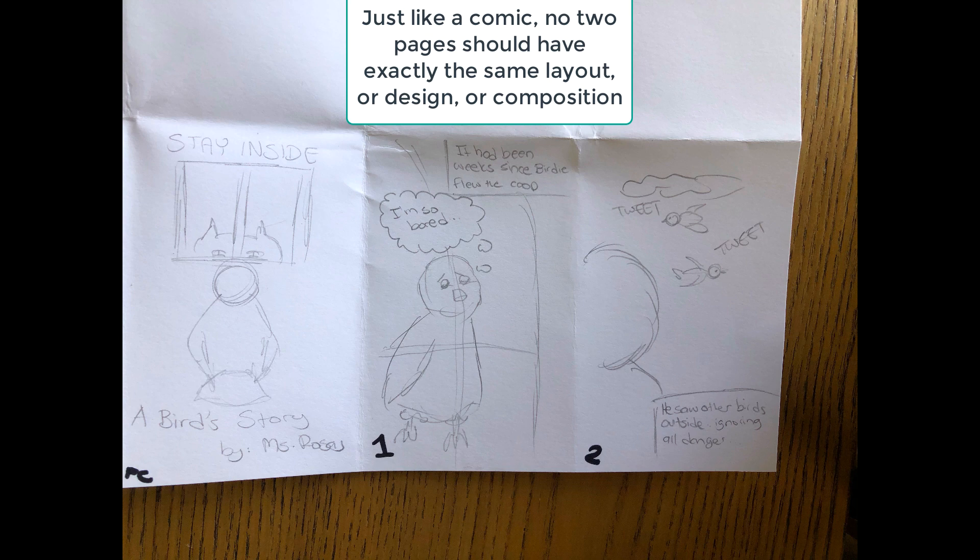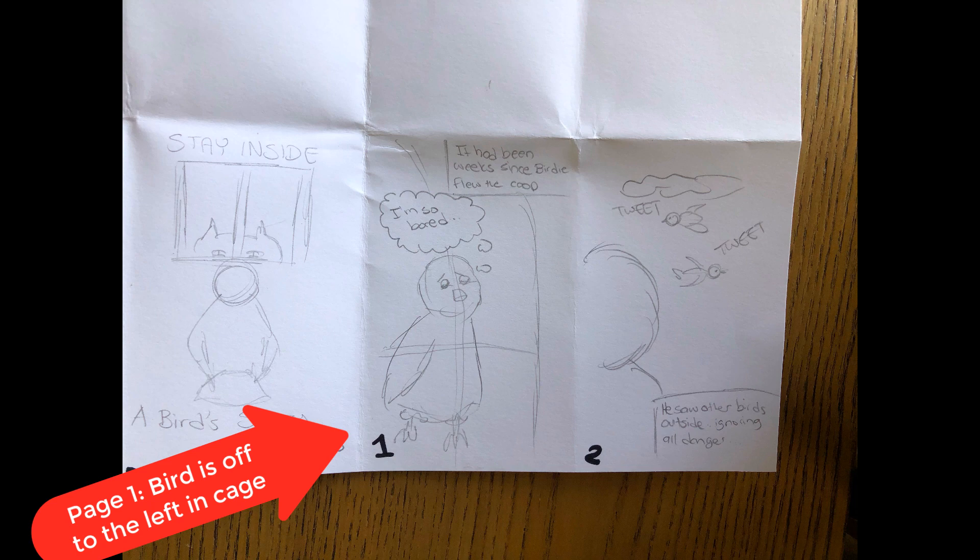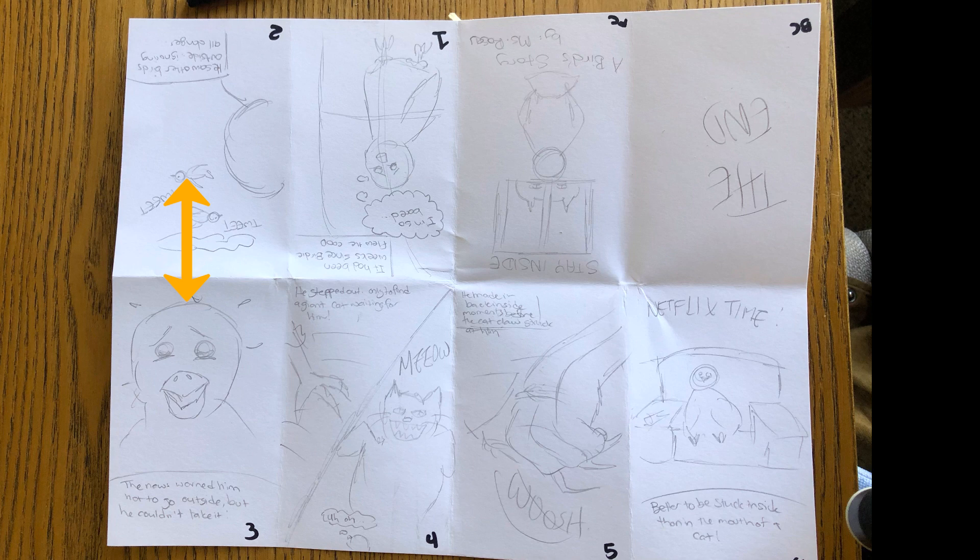I also recommend you try to draw different layouts in each of your boxes. So instead of having a bird in the exact same place in every single box, figure out different ways to compose each part of your story. Here's an example of my finished pencil drawing. As you can see, two looks like it's upside down in comparison to three. So does one compared to four, five compared to my front cover, and six compared to my back cover.